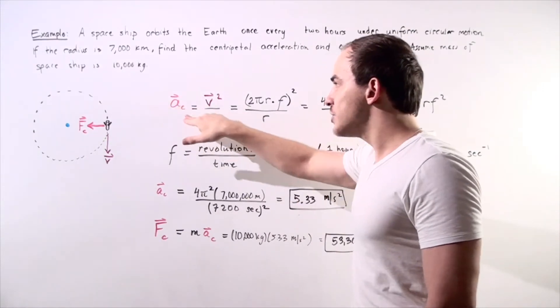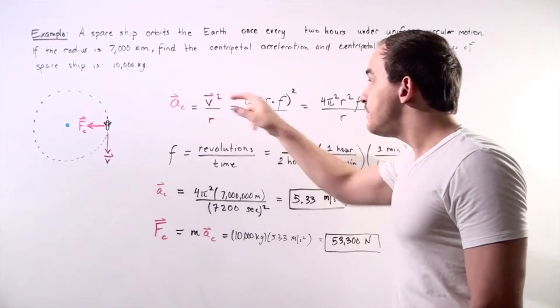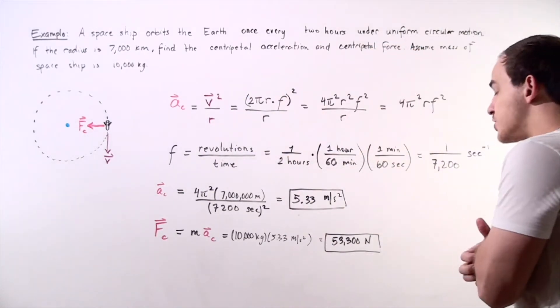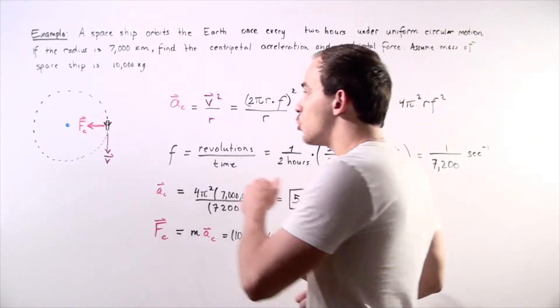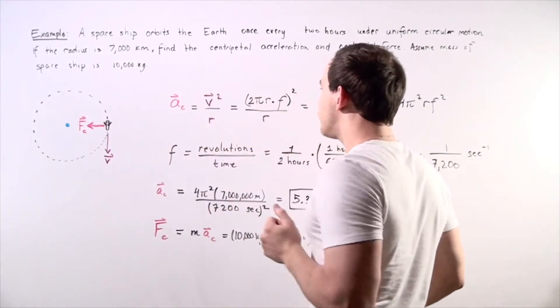Recall that acceleration is equal to V squared divided by R, and V is related to frequency by the following equation. So velocity is equal to the circumference of our circle multiplied by the frequency.